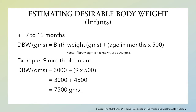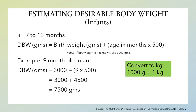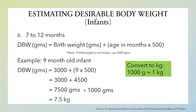Again, to convert grams to kilograms, we will use the following conversion factors. 7500 divided by 1000 — the ideal body weight for a nine-month-old infant is 7.5 kilograms.